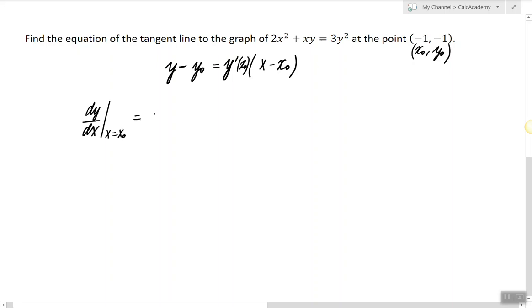This is what the slope is and this is what we need to find in order to answer this question. Since the function is not given to us explicitly, we're going to use implicit differentiation. That means we're going to differentiate the left and right side of the equation. So let's go ahead and apply the derivative to both sides.